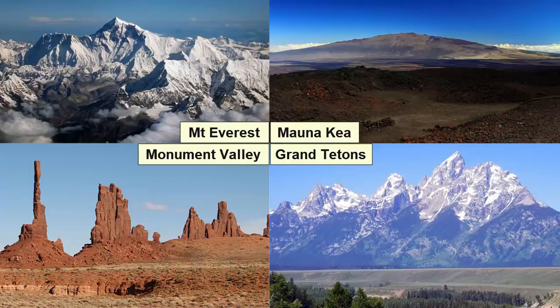The word mountain applies to any landform that stands taller in elevation than the surrounding land. The shape of the variety of mountains we see across the planet comes from a combination of tectonic forces that push the land up, and erosional processes such as glaciers, gravity, wind, and running water that carve that land down.